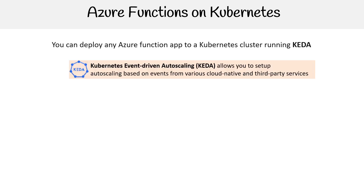If you don't know KEDA, it is the Kubernetes event-driven autoscaling service and allows you to set up autoscaling based on events from various cloud-native services and third-party services. In this case, it could be for Azure Function apps.